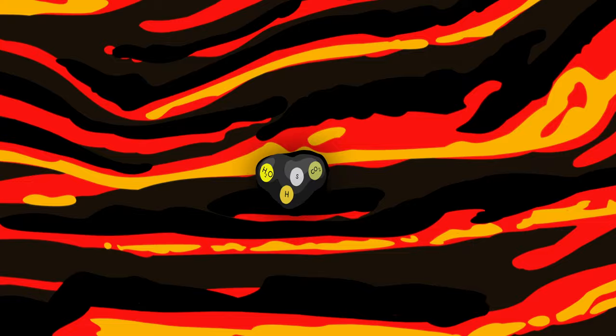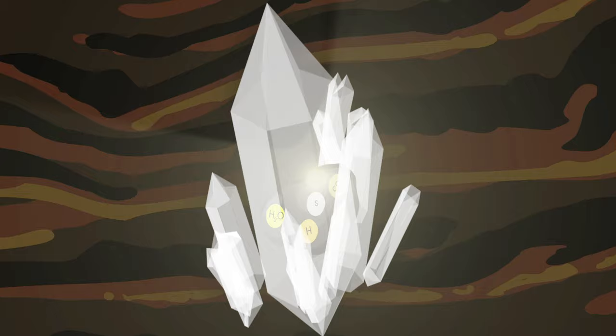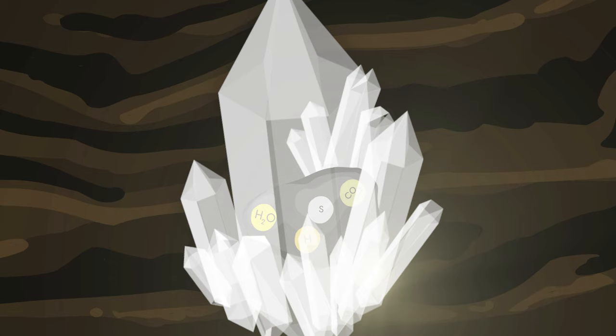You could think of a melt inclusion like a time capsule or like a message in a bottle or even an insect trapped in amber. It's this thing that was there for a moment that's now encapsulated and preserved for us to study later.